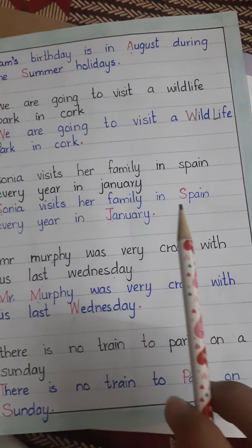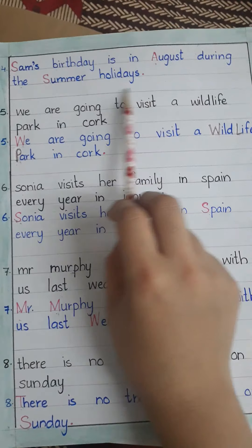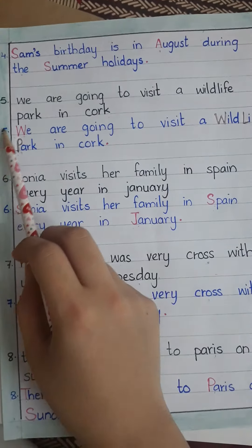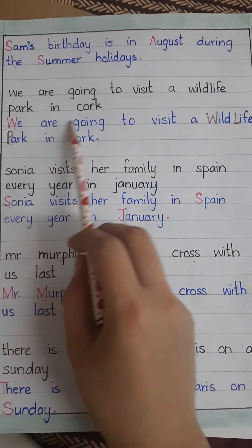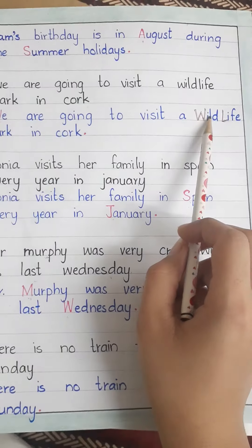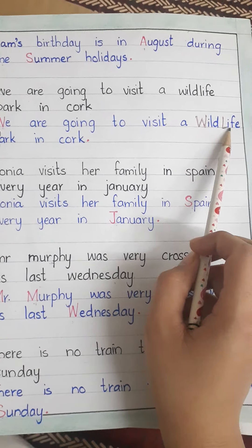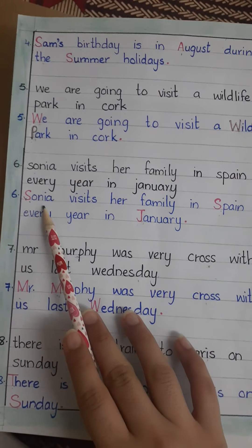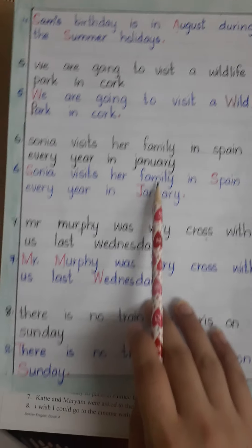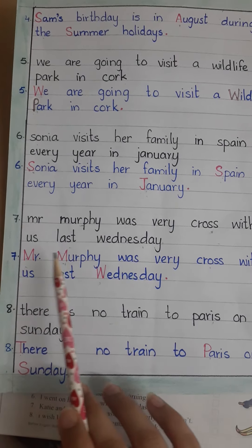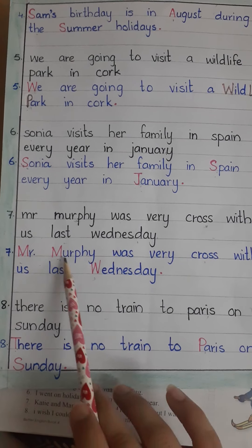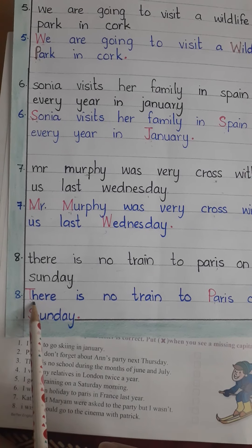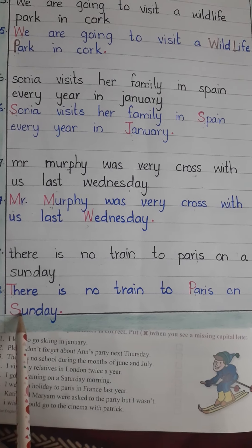Number four: 'Sam's birthday is in August' — S of Sam and A of August are capital. Number five: 'We are going to visit a Wildlife Park in Cork' — W of Wildlife and L of Life are capital as it is a proper noun name. Then S of Sonia, S of Spain, J of January are capital. Mr Murphy — M of Mr and M of Murphy are capital. W of Wednesday is capital. T of 'The' and P of Paris are capital, as is S of Sunday.